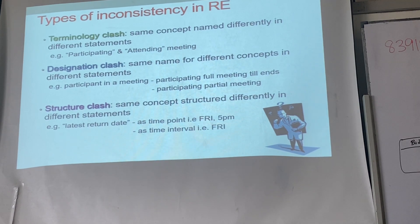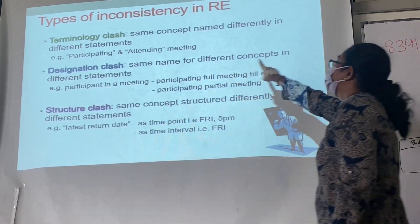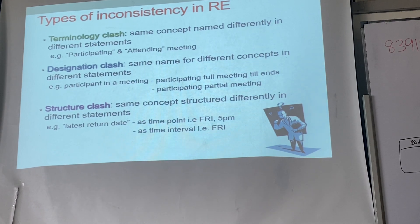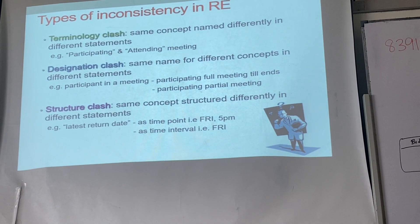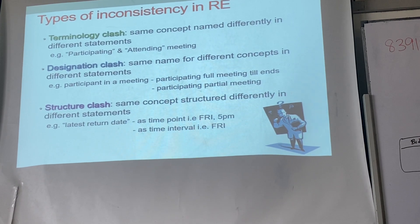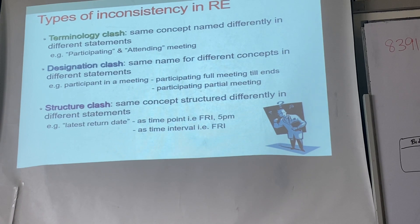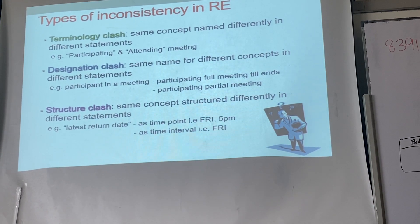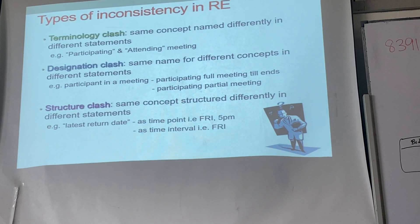Now the opposite — one term, two concepts. That's a destination clash. Example: the word 'borrower.' One place says the borrower can keep the book for five weeks; another says three weeks. The problem is one refers to students and the other to staff, but you used the same term to describe two different categories of people.